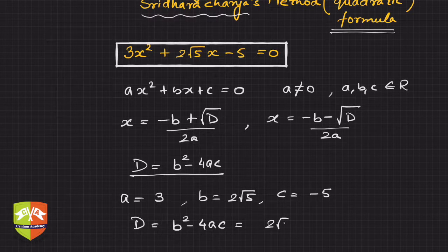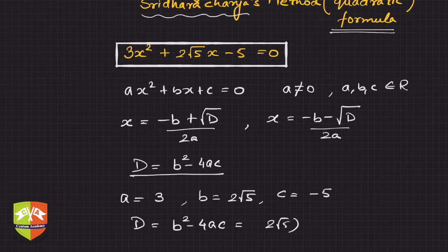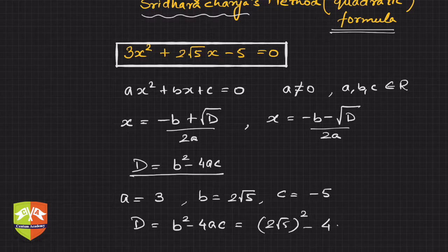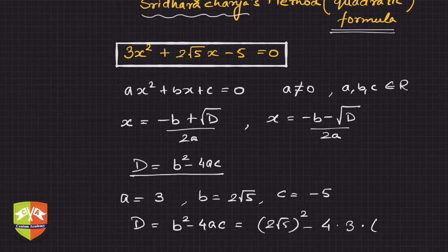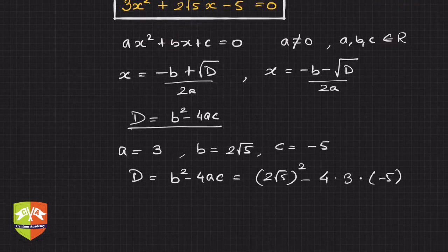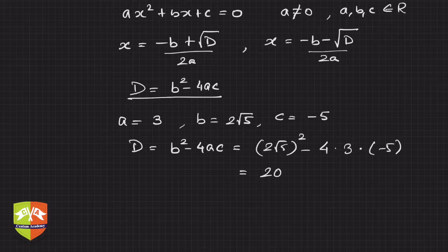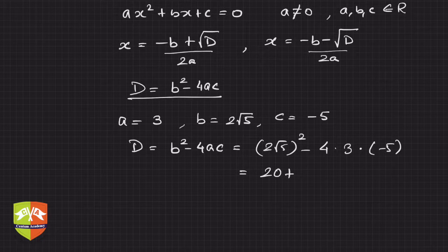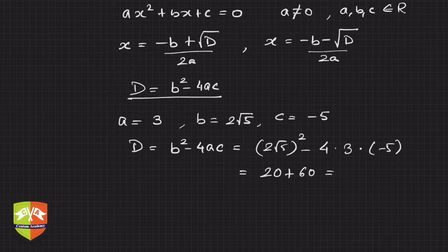What's the value of D? D = b² - 4ac = (2√5)² - 4 × 3 × (-5). So 2√5 squared is 20, and then plus 12 × 5 is 60. Hence D is 80.